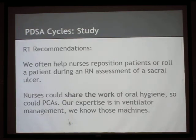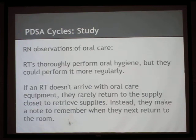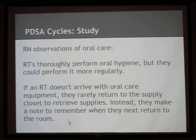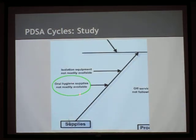The RT recommendations showed they liked the idea of rebalancing the workload. They even said, 'we help them — why don't they help us?' The RNs had some good and some not-so-good things to say. They observed that when oral care didn't happen, often it was because the RT didn't have supplies and just said they'd do it next time. Knowing that, you can say: why don't we just put the supplies right next to the bed so they're always there? You don't have to carry them around in a cart. An extremely simple change to make.